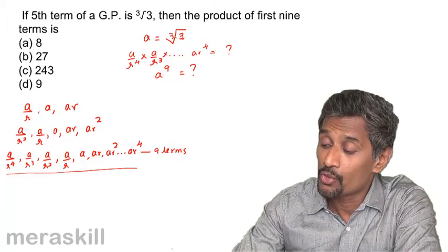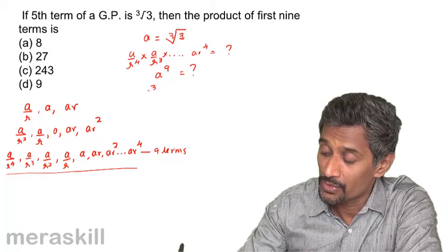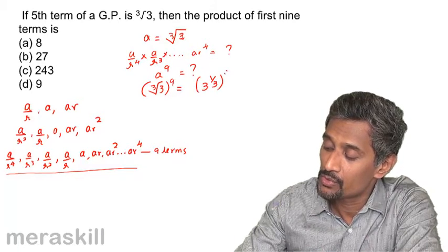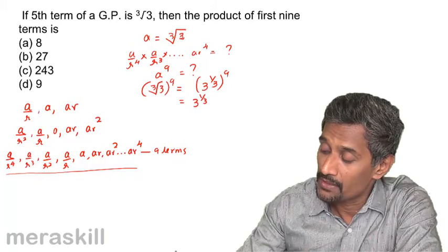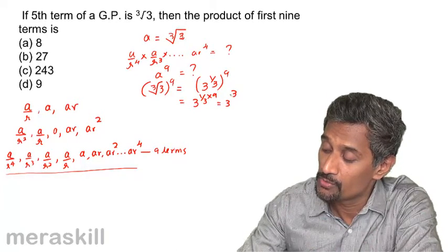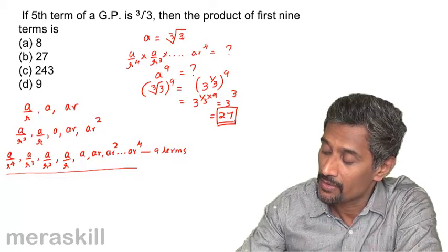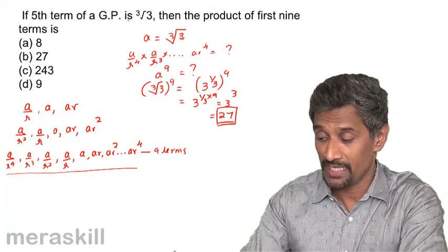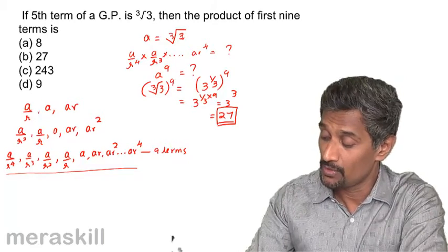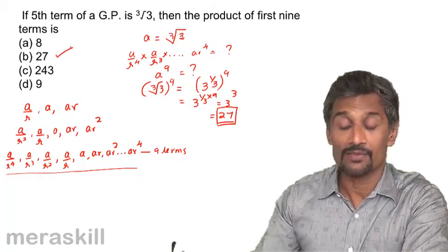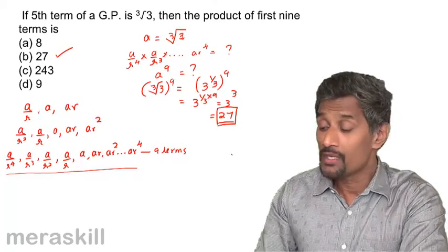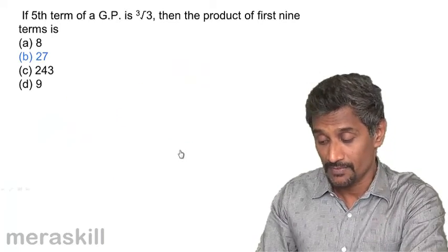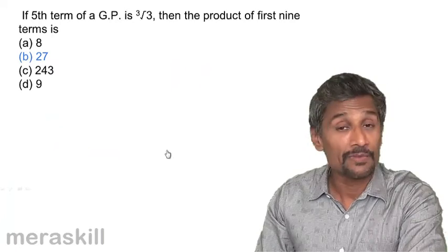Since a = ∛3, the product a⁹ = (∛3)⁹ = (3^(1/3))⁹ = 3^(1/3 × 9) = 3³ = 27. So if the fifth term of the GP is ∛3, the product of the first nine terms is 27. Remember this approach — we shall be reiterating it. The product of the first nine terms turns out to be 27.